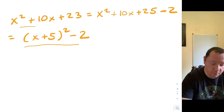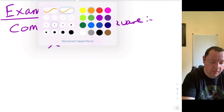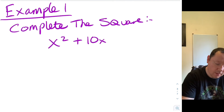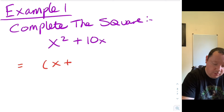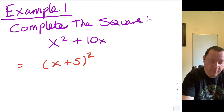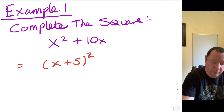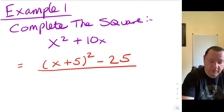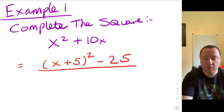Let's look at another example. Example one says complete the square: x squared plus 10x. That equals x plus 5 squared — but 5 times 5 is 25, and you'll notice there is nothing on the end of the original expression. So I need to take away the extra 25 that I've just made. The answer is x plus 5 squared take away 25, and that is completing the square.